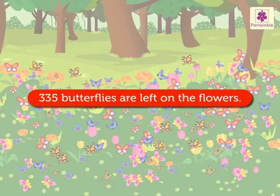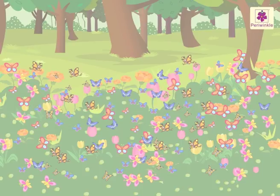Thus, three hundred thirty-five butterflies are left on the flowers. Now, let us subtract the numbers 751 and 416 directly.